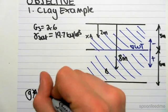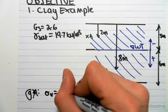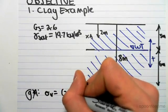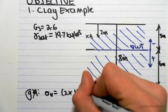At A, the total stress will equal the depth, so 2 times gamma sat. And gamma sat we've been given is 19.7, so you get 2 by 19.7 is 39.4 kPa.